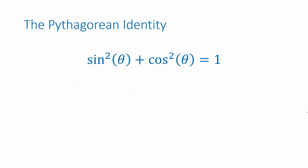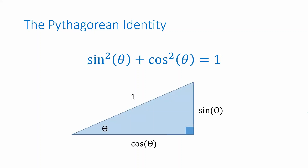Another important identity is the so-called Pythagorean identity. This comes from looking at triangles. If you have a right triangle with an interior angle theta, the opposite side is the hypotenuse times sine of the angle, and the adjacent side is the hypotenuse times cosine of the angle. Then if you just use the Pythagorean theorem, a squared plus b squared equals c squared, you come up with the identity: sine squared plus cosine squared equals 1.